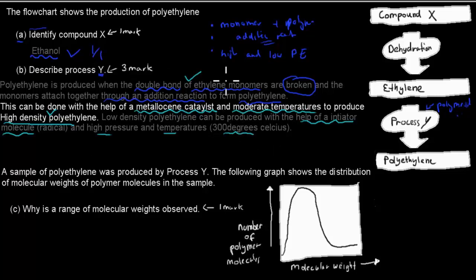So right now we're describing how high-density polyethylene gets produced. So then we need a metallocene catalyst and moderate temperatures to produce this high-density polyethylene. So that gets your mark. And then we also quickly mentioned how low-density polyethylene gets produced. So low-density polyethylene can be produced with the help of an initiator molecule, which was that peroxide radical, and high pressure and temperatures of about 300 degrees Celsius.